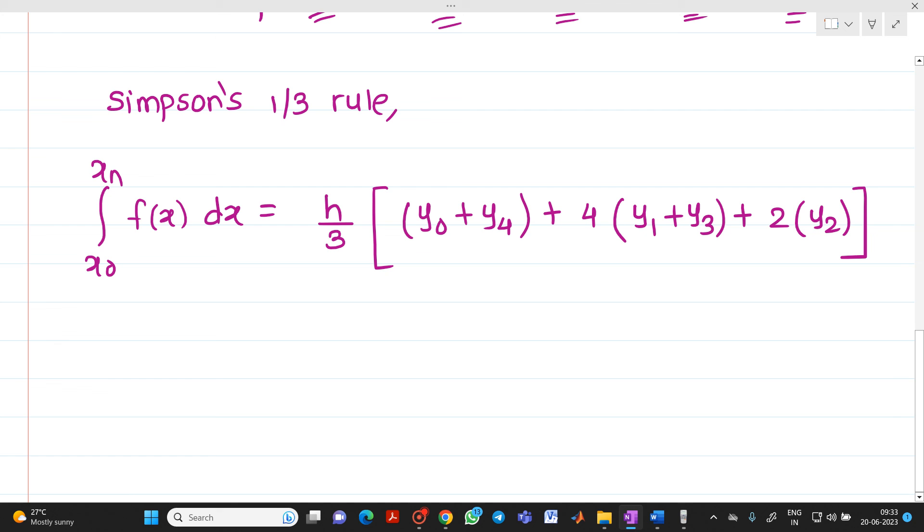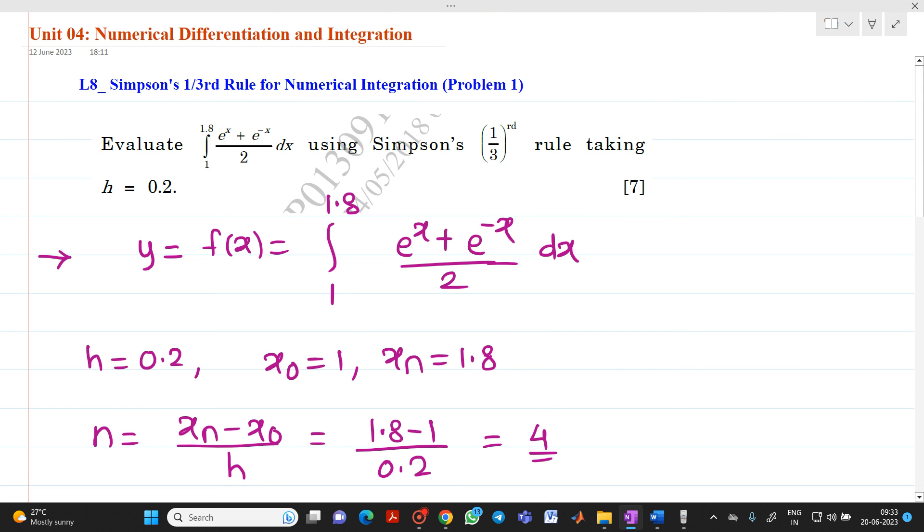So, if you substitute all the values in the given function and if you solve, then you will get answer of your function e raised to x plus e raised to minus x divided by 2. You will get answer as 1.766933. So, this will be your final answer for Simpson's one-third rule.